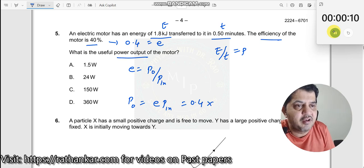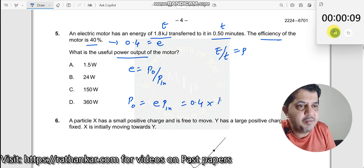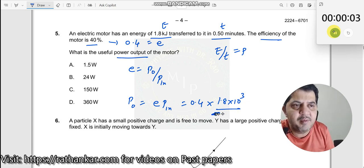You can take 0.4 multiplied by 1.8 into 10 cube divided by 0.5 minutes. 0.5 minutes is equal to how much? It is half minute is 30 seconds over here. So when I do this, what is the answer you get?